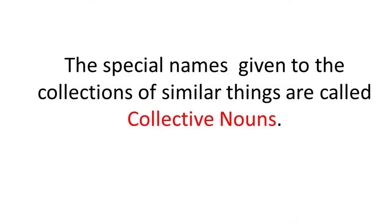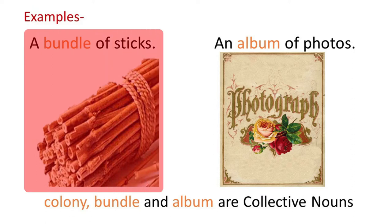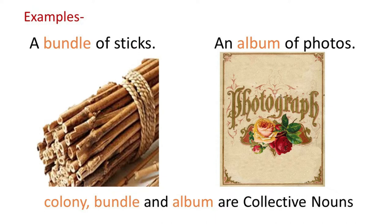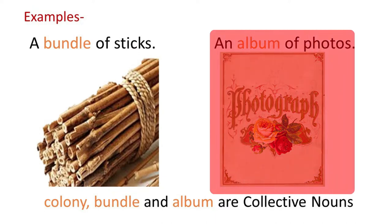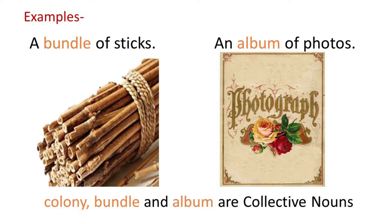The special names given to the collections of similar things or persons are called collective nouns. Let us look at a few examples. A group of sticks is called a bundle — a bundle of sticks. Likewise, a group of photographs is called an album — an album of photos. So the words colony, bundle, and album are collective nouns.